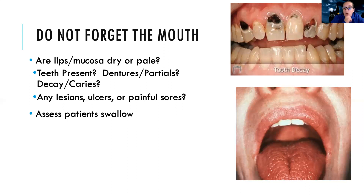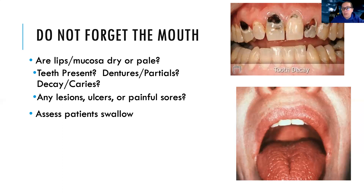We want to assess their ability to swallow — bringing you back to neurological assessment. We're looking for signs of difficulty swallowing, any coughing, oxygen saturations going down, or any real struggling when they swallow something. We're also listening to their lung sounds to see if they're aspirating — is the food going where it's supposed to?